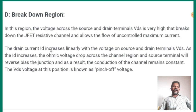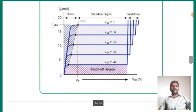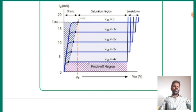The drain current increases linearly with voltage on source and drain terminals — VDS increases. If we increase the current, the drain voltage will increase the current, and the gate-source voltage will increase the current. If the ohmic voltage drops across the channel region, the source terminals will reverse the current. The conduction of the channel remains constant at VDS voltage — at this position, it is known as pinch-off voltage.